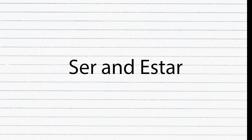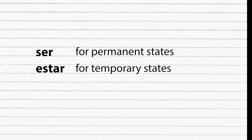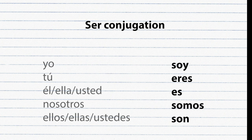To make simple sentences we need to learn the verb 'to be' in Spanish: SER and ESTAR. Both mean 'to be,' but SER is used for permanent states and ESTAR is used for temporary states. Both are irregular verbs. SER conjugations: Soy, Eres, Es, Somos, Son.